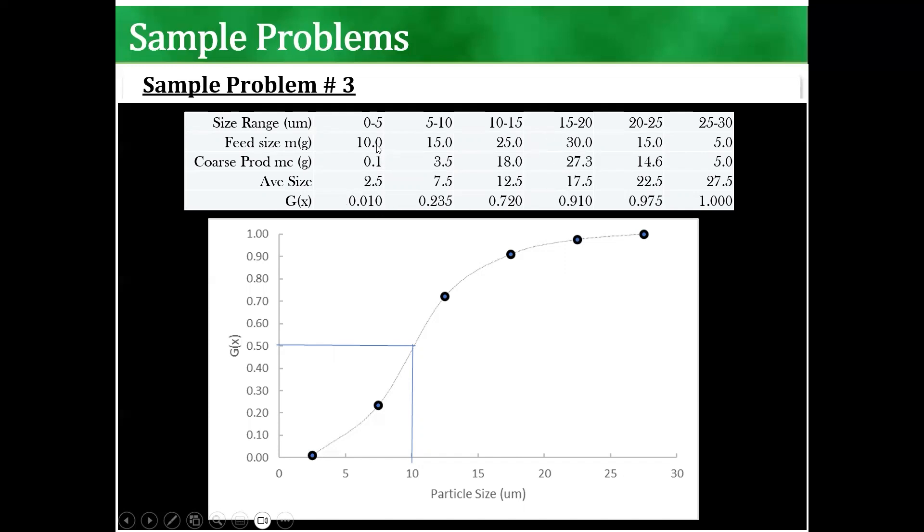So that's the efficiency of each of those, and then I plotted them. After I plotted them, I just projected on the graph, 50% of it falls at 10 microns. So I can say here that this one is basically 10 microns at GX is 0.5.